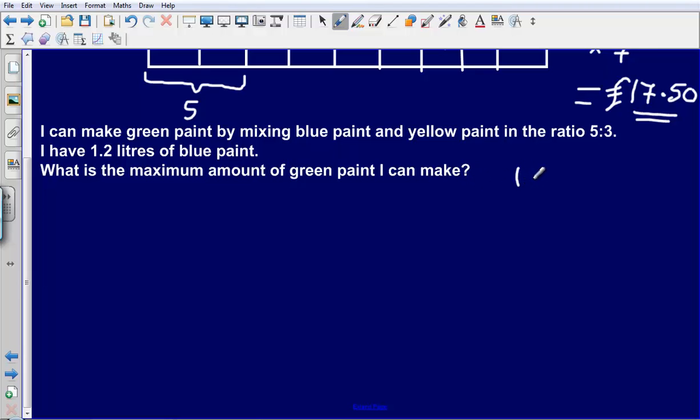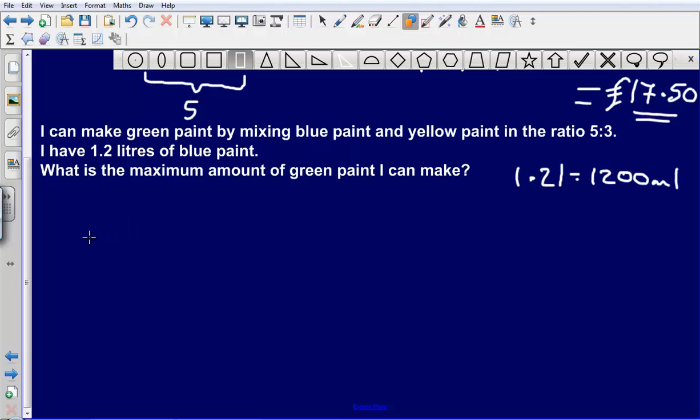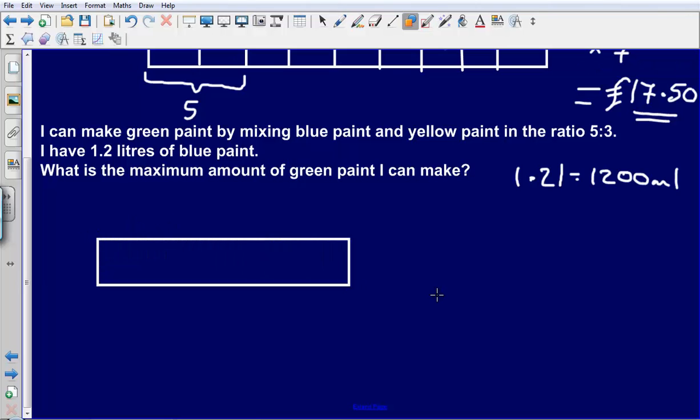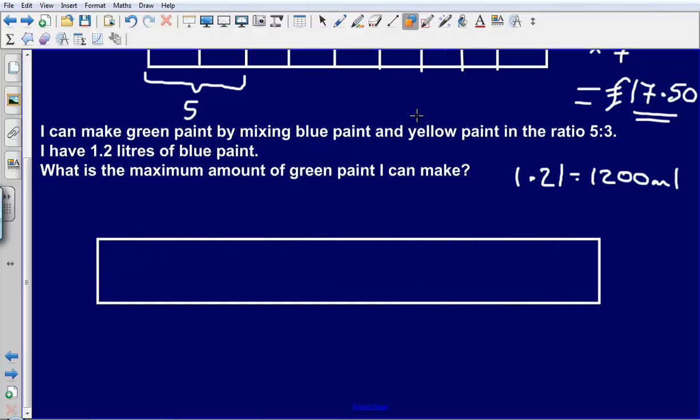Let's start off first of all. 1.2 litres is the same as 1,200 millilitres, just easier to work in millilitres I think. Now first of all let's draw up our bar. Again we don't know how much our bar is going to be worth in total.